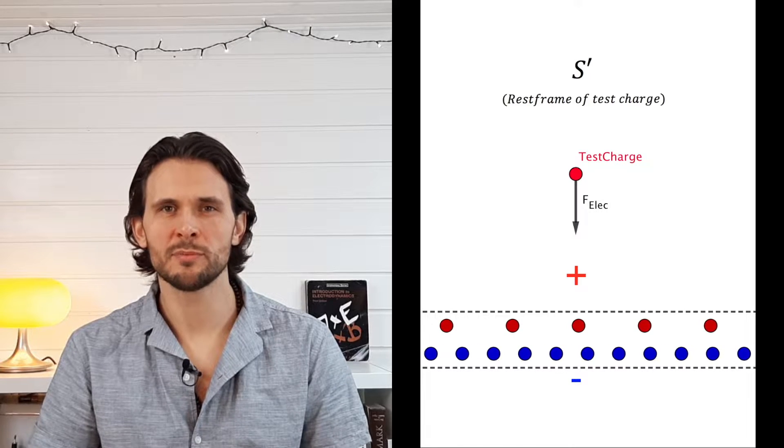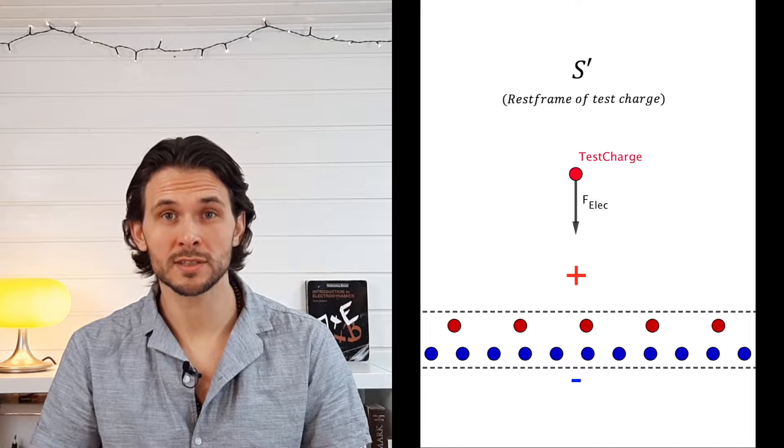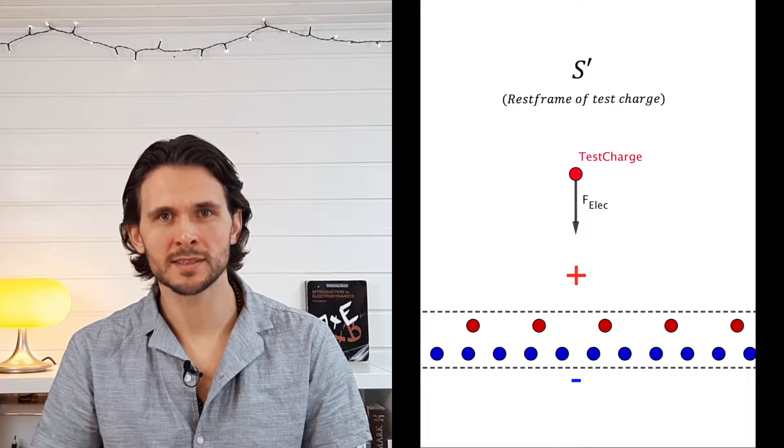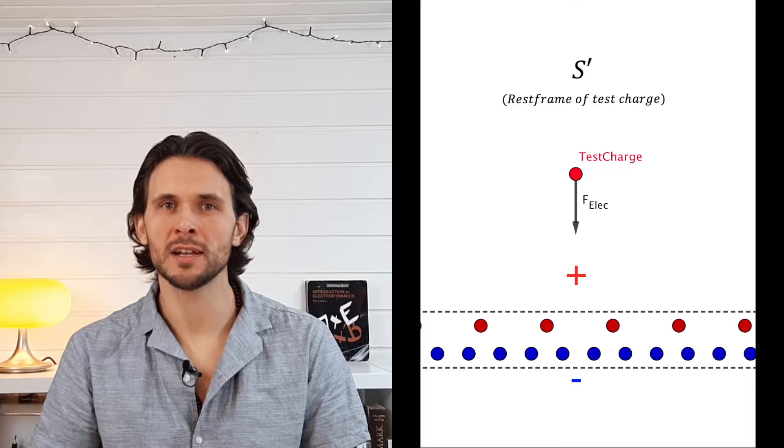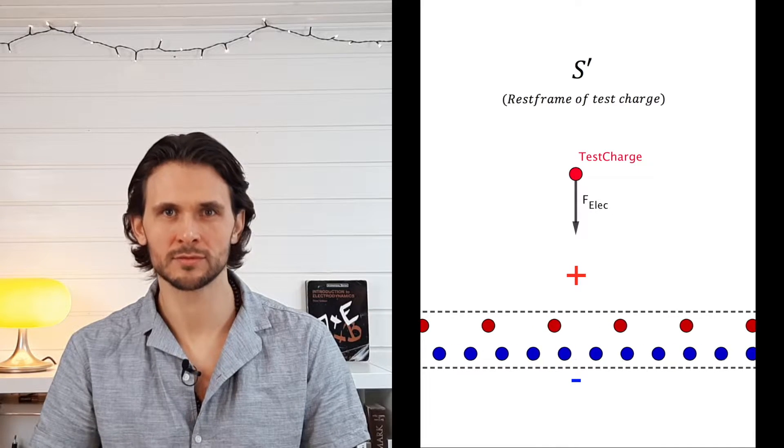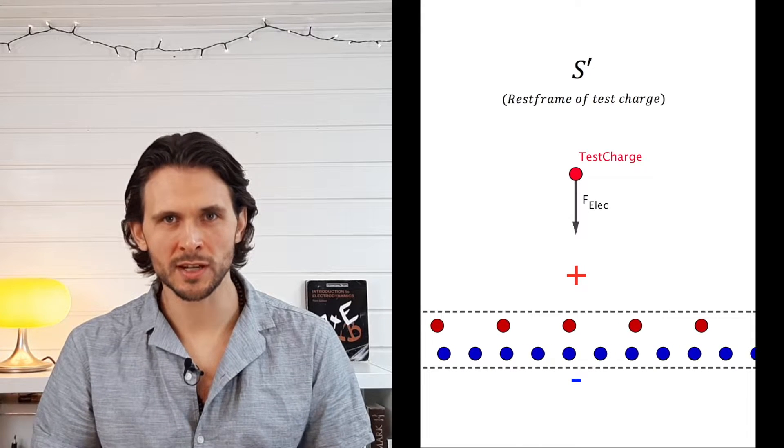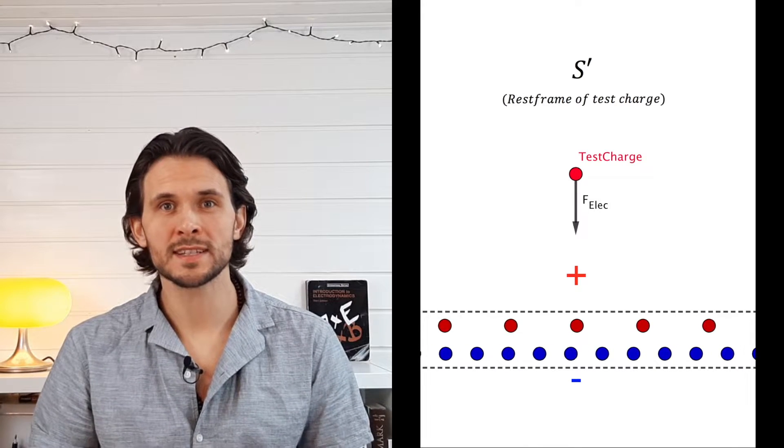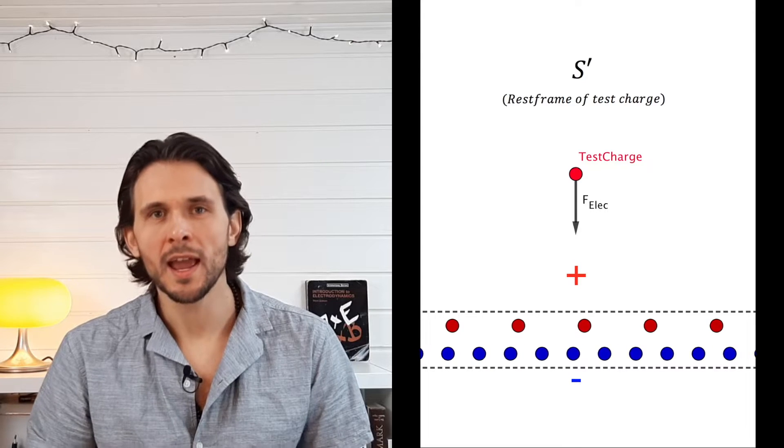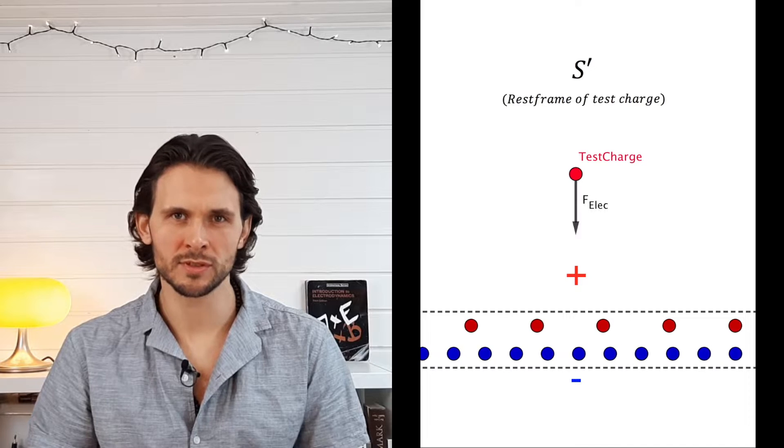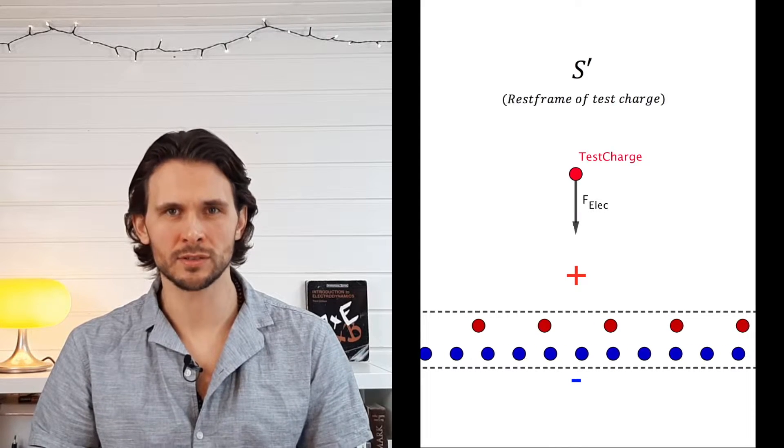Here the positive particles will have a lower velocity and therefore be less length contracted. On the contrary, the negative particles will have a higher velocity and be more length contracted. Due to the different spacing of the positive and negative charges, the wire now carries a static electric charge.